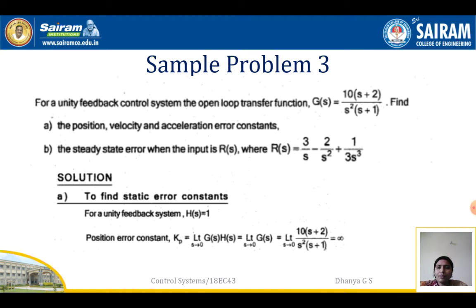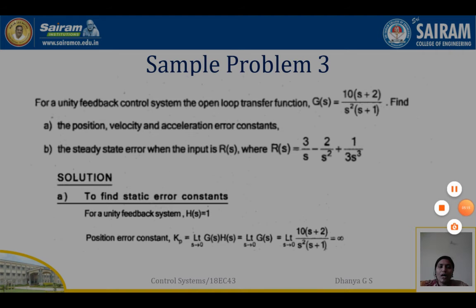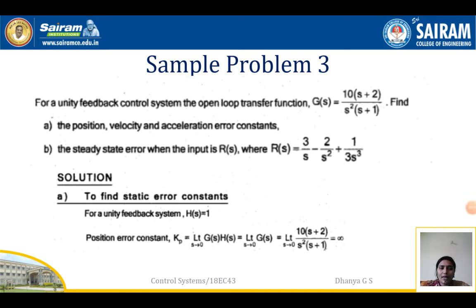The third problem: for a unity feedback control system, the open loop transfer function G(s) = 10(s+2) / (s²(s+1)). Find the position, velocity, and acceleration error constants. Also find the steady state error when the input r(s) = 3/s − 2/s² + 1/(3s³). Since it is unity feedback, H(s) = 1. Starting with the position error constant, Kp = limit s tends to 0 of G(s)·H(s).